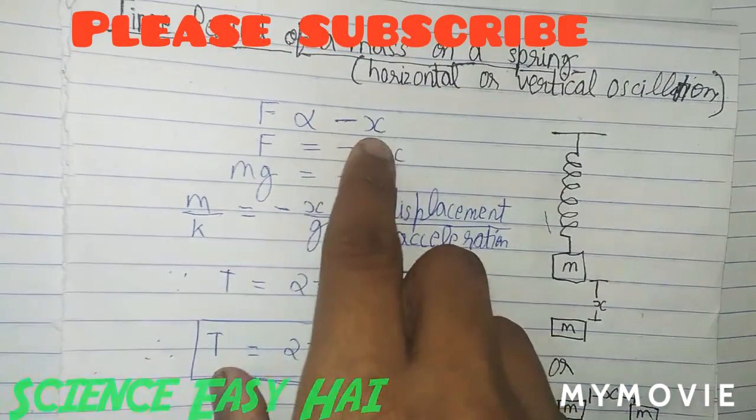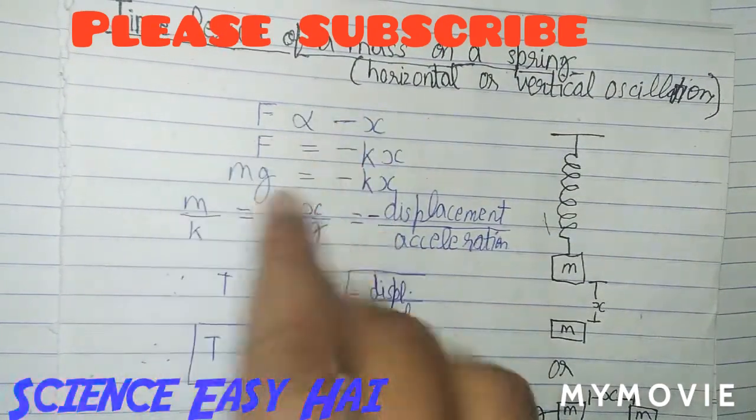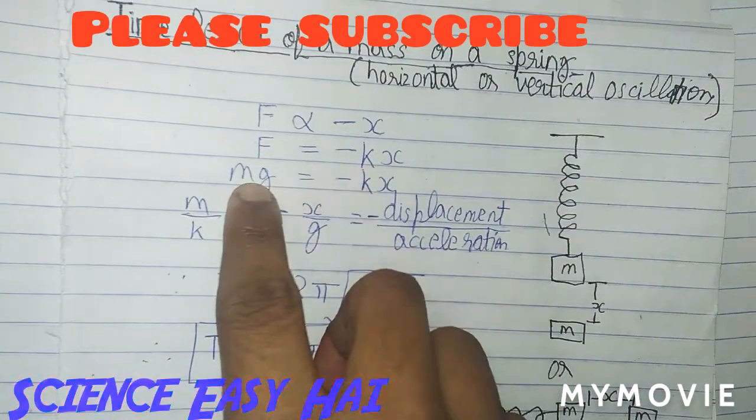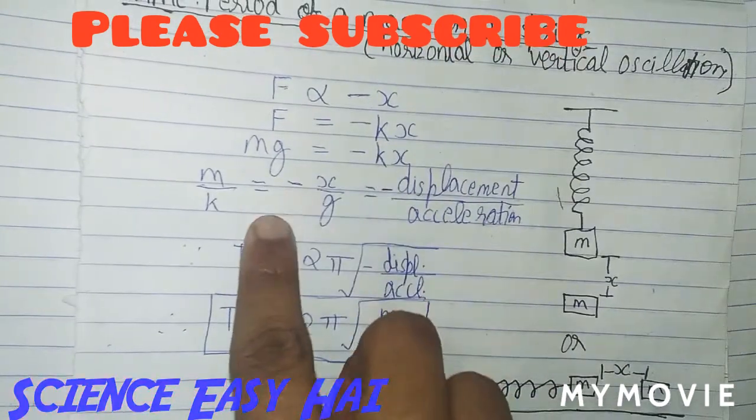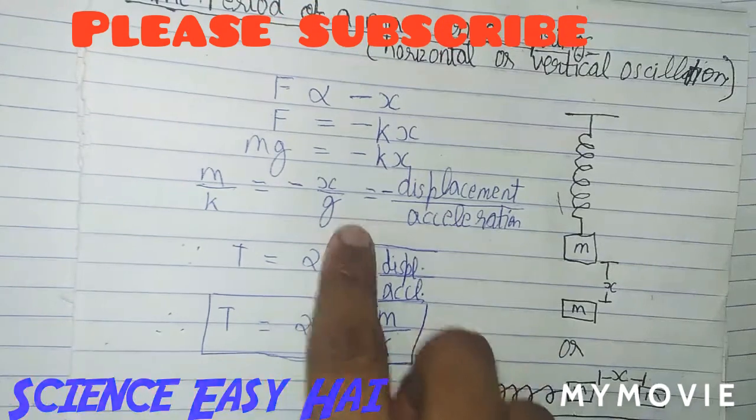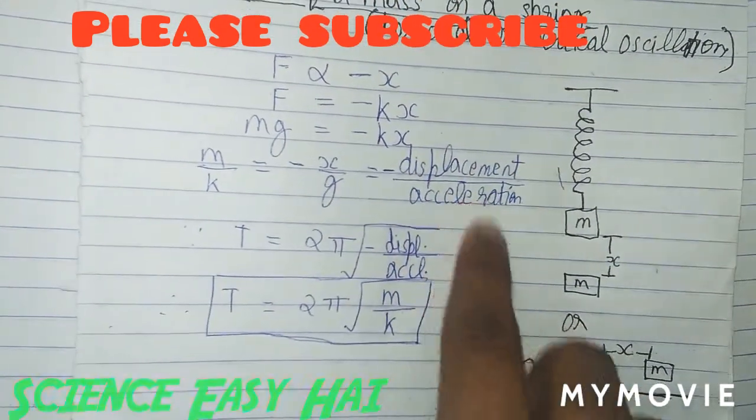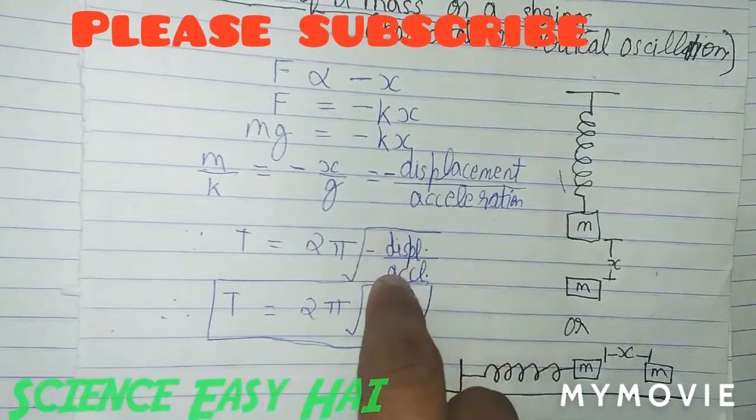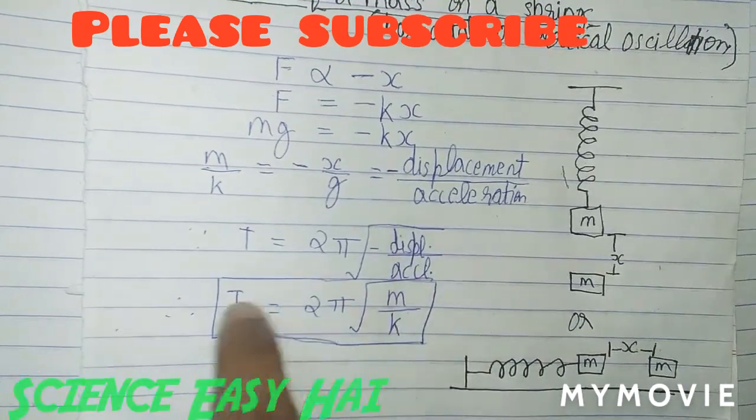Force is directly proportional to minus X. We have K put here which is constant, and F is equal to minus X upon G, which is equal to minus displacement upon acceleration. Since T is equal to 2π under root displacement upon acceleration, therefore T is equal to 2π under root M upon K.